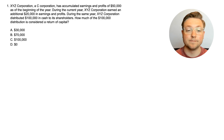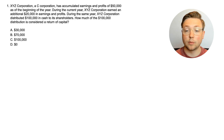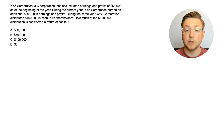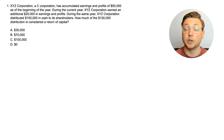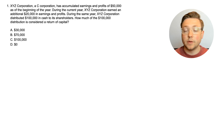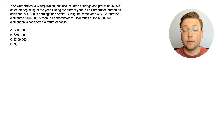Alright, here we are at question one. XYZ Corporation, a C-Corporation, has accumulated earnings and profits of $50,000 as of the beginning of the year. During the current year, XYZ Corporation earned an additional $20,000 in earnings and profits. During the same year, XYZ Corporation distributed $100,000 in cash to its shareholders. How much of the $100,000 distribution is considered a return of capital? We've dealt with something similar in a previous video about non-cash distributions, and it's very similar for cash distributions.